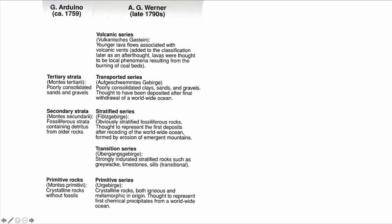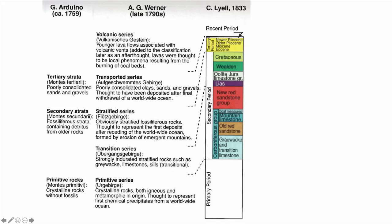Modern stratigraphy really started in the 19th century. Charles Lyell, in the 1830s, can be credited for coming up with the first stratigraphic time chart that looks remotely modern. He defined terms such as the Carboniferous, the Lias, the Cretaceous, and even the tertiary period, which are still actually used today.